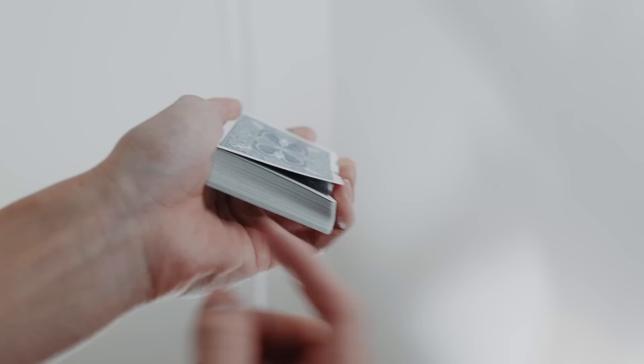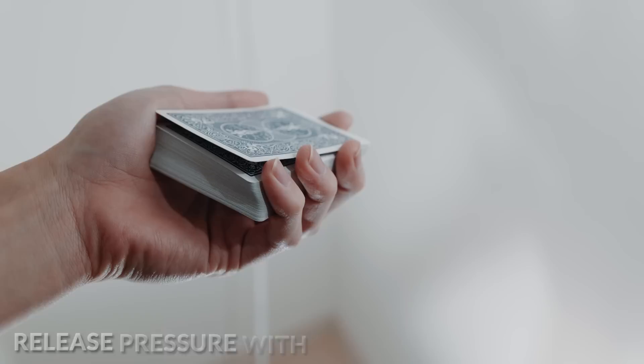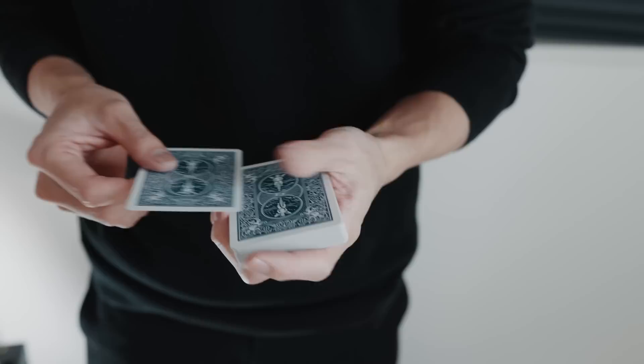However, right now the gap is only in one corner of the deck. So to make this more believable, release pressure with the base of your thumb and this will allow the rest of the deck to pop up, just the top cards. And this creates a full break as shown. This is a bit of a knacky move, but just do it over and over again until you get it.